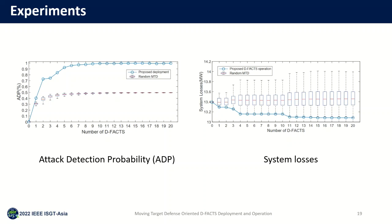Next, we verify the detection rate of our method on FDI attacks and the effect on system losses. Our experiment uses random MTD as a control. The attacker detection probability is shown in the picture on the left. The ADP of the proposed method is significantly ahead of random MTD. Moreover, the ADP could be rather close to the upper bound when there are 10 defect devices. From the picture on the right, the proposed defect operation scheme could achieve the minimum power losses. When there are enough defect devices, considering the cost of deployment, 11 defect devices are enough for both security and economy targets in the 14-bus system.